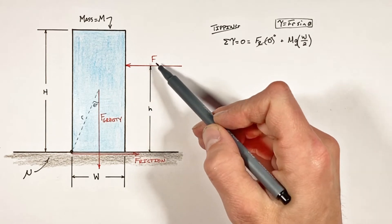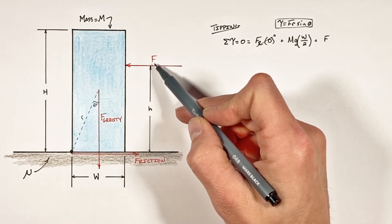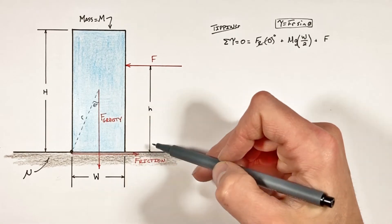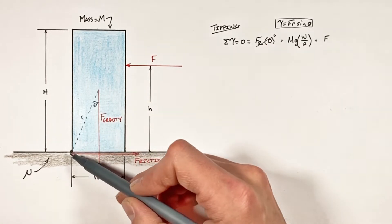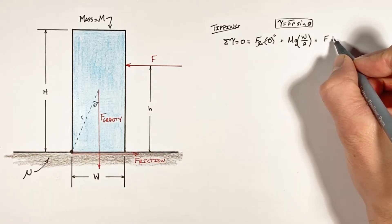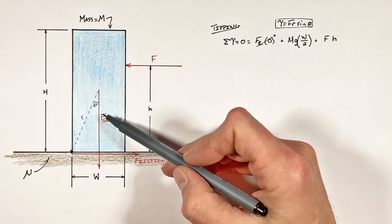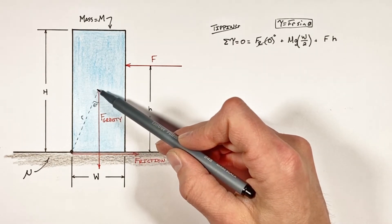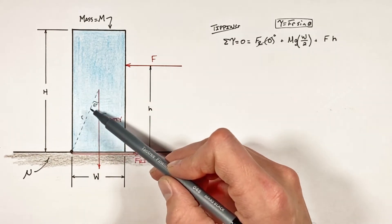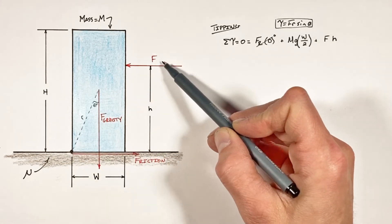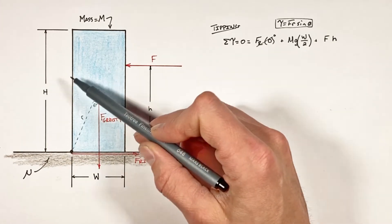And last we have this push force acting on the block. Now this push force is going to act at some effective moment arm h away from this pivot point. Now we have to be careful here because the force by gravity is trying to rotate this block clockwise around this pivot point. This force, if it's going to cause the block to tip, is going to be actually trying to rotate the block counterclockwise.